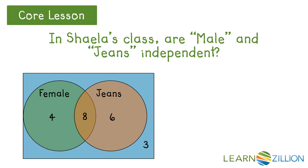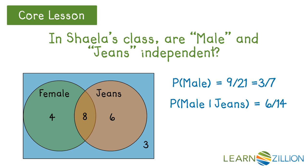Looking at the class again: are male and jeans independent? The probability of being male is 9 over 21, since there are 9 boys — 6 wearing jeans and 3 not. The probability of being male given wearing jeans: there are 14 students wearing jeans, 6 of whom are male, so that probability is 6 over 14. These two fractions are equal, which means the two events are independent.